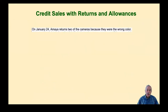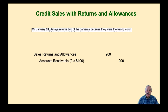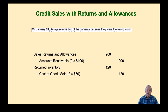On January 24th, Amea returns the two cameras that were the wrong color. We debit sales returns and allowances and credit accounts receivable. We also bring that inventory back onto the books with a debit to inventory — returned inventory — and a credit to cost of goods sold. This is for the two cameras at $60 each.